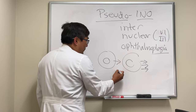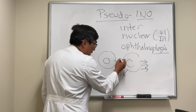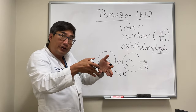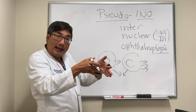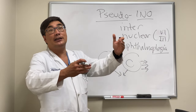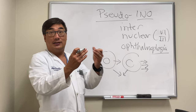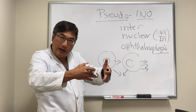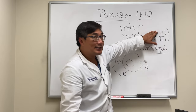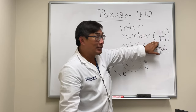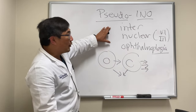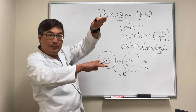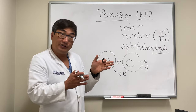We can sometimes overcome this INO with a convergence effort, and if the eye does converge, that means the supranuclear pathway to the third nerve medial rectus is still intact. This suggests the INO is actually caudal in the pons, because you have intact convergence at the level of the midbrain. Since the sixth nerve nucleus lives in the pons and the third nerve nucleus lives in the midbrain, convergence might help differentiate the pontine versus midbrain level of the lesion.